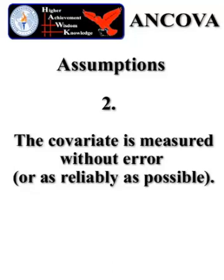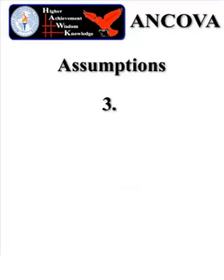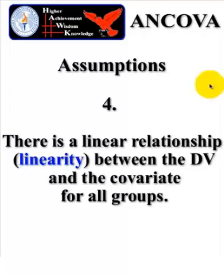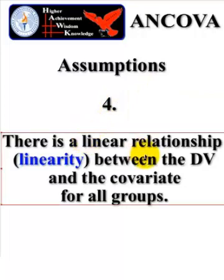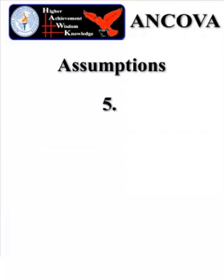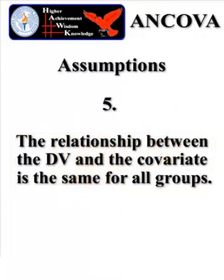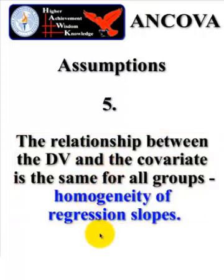The covariate is age in weeks. Assumption number three: the covariates are not strongly correlated with one another — we only have one covariate in this study, so we don't have to worry about that one. Number four: there has to be a linear relationship between the DV and the covariate for all of your groups — that's what we call the assumption of linearity for an ANCOVA. And last but not least: the relationship between the DV and the covariate has to be relatively the same for all groups — that's what we call homogeneity of regression slopes.